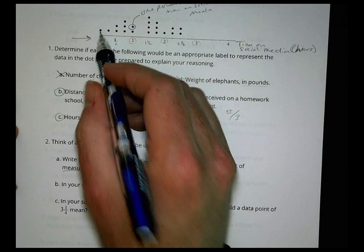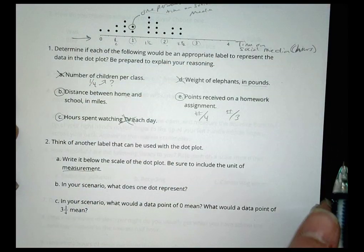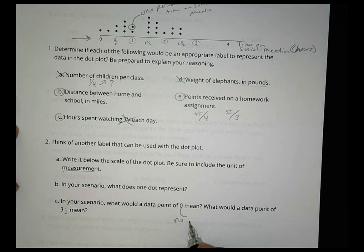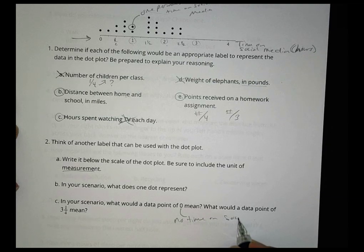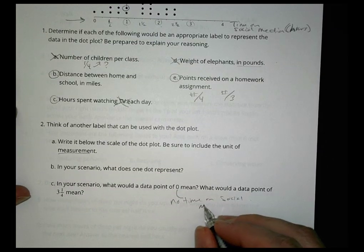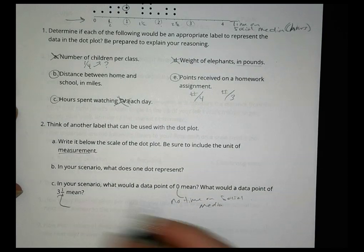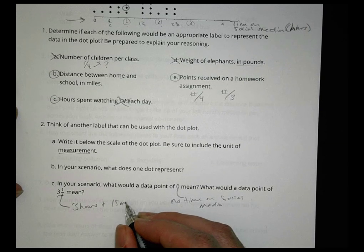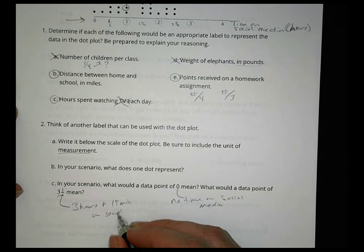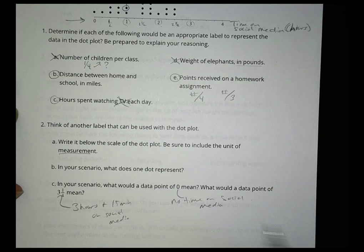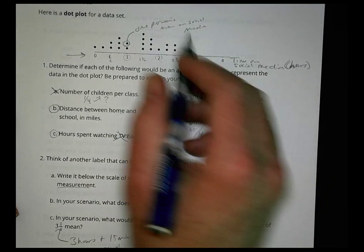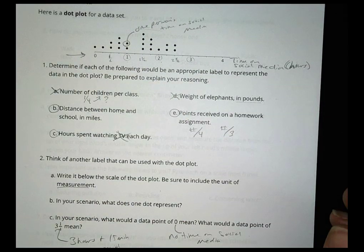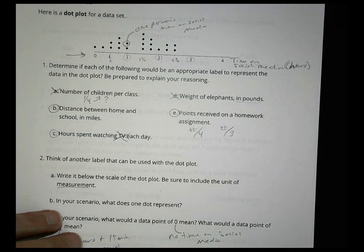In your scenario, what does one dot represent? Well, in this case here, if I have one dot right here, this represents one person, and this is one person's time on social media. One person was on it for an hour. One person was on it not at all. Some person was two and a half hours. In your scenario, what would a data point of zero mean? That would mean they did no time on social media. How about three and a quarter? That would mean three hours and 15 minutes on social media.